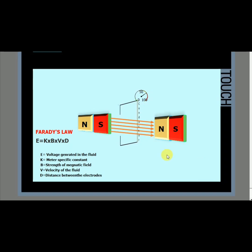Faraday's law can be expressed simply as E is proportional to K times B times V times D, where E is the voltage generated in the fluid. K is the meter specific constant. B is the strength of the magnetic field. V is the velocity of the fluid. D is the distance between the mag meter's electrodes.